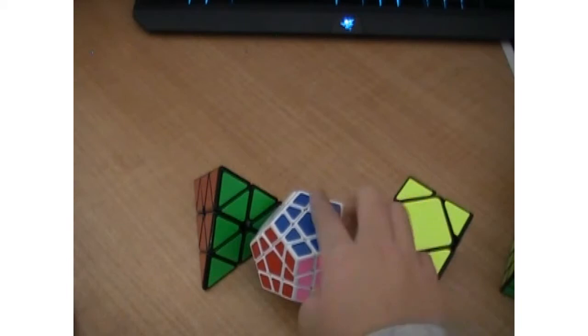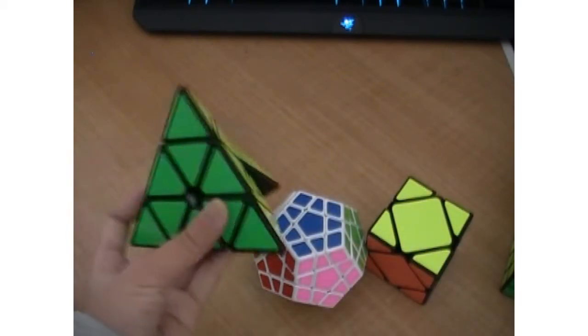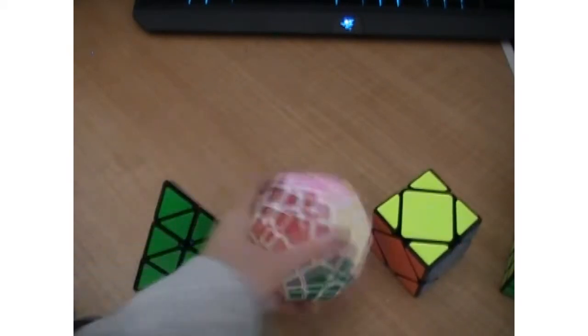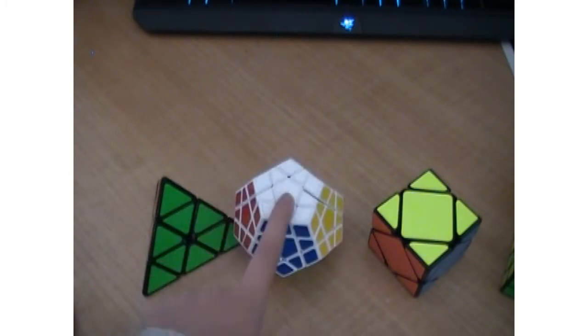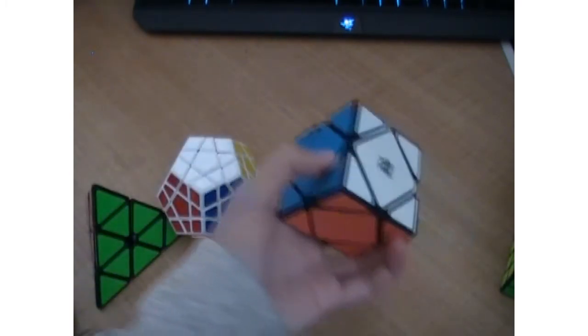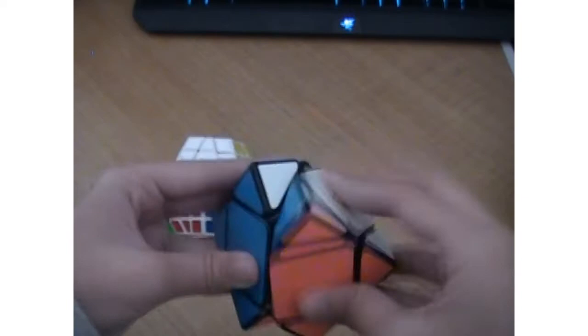I only have one of each for these. I have one MoYu Magnetic Pyraminx, one Shang Shao Megaminx, but I'm getting a new Megaminx soon so get ready for an unboxing of that. And I have one Skewb, the MoYu Magnetic Skewb.